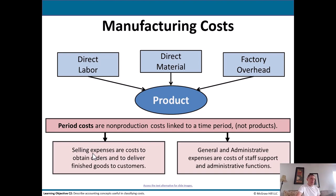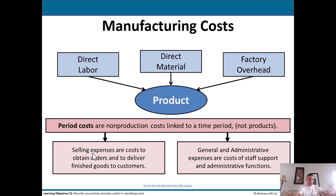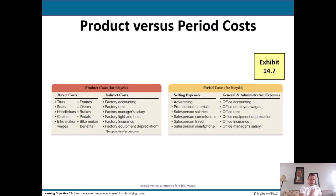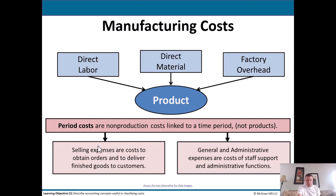Product costs flow through your inventory accounts and will eventually be expensed through cost of goods sold as and when you sell the product. This speaks to the matching principle from financial accounting. While you're making products, you're accumulating costs — labor, material, overhead — but you don't have revenue to match it with yet because you haven't sold it. These product costs will be expensed through cost of goods sold once you sell the product, because now you have revenue to match it with. Period costs — selling, general, or admin — are just expensed during that particular time period.